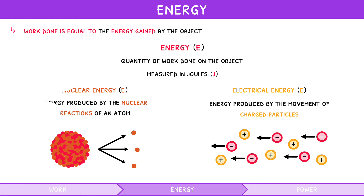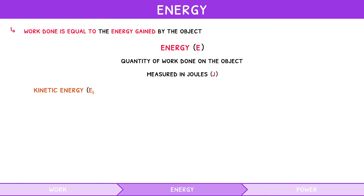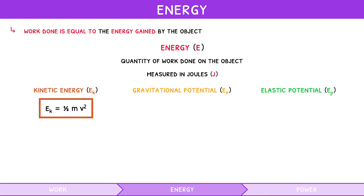In mechanics, you primarily deal with three of these types of energy: kinetic energy, gravitational potential energy, and elastic potential energy. The formula for kinetic energy is one half times mass times velocity squared. The formula for the change in gravitational potential energy is mass times gravity times change in height. And the formula for elastic potential energy is one half times the spring constant times the spring's extension squared.